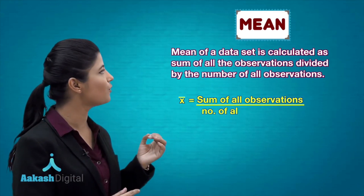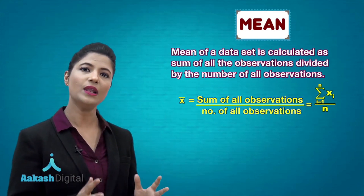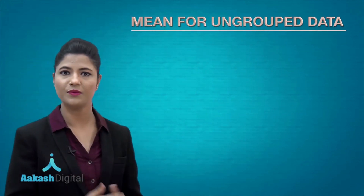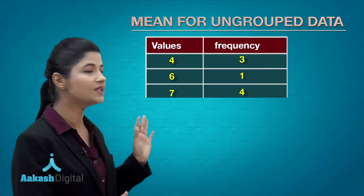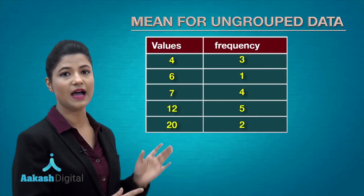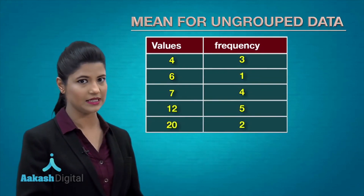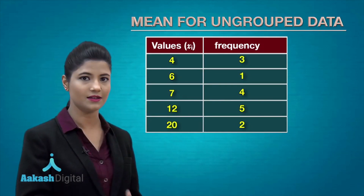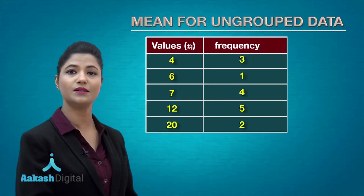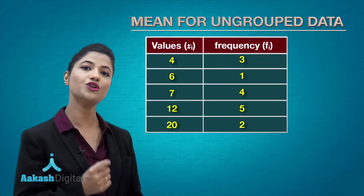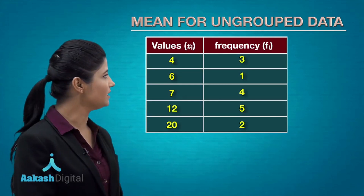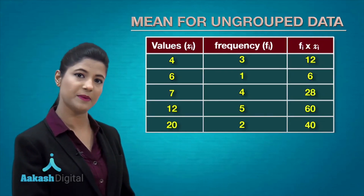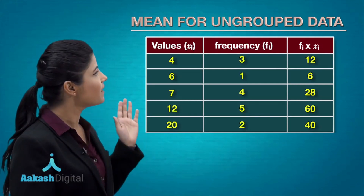Now let's see how you obtain the mean for ungrouped data. To obtain the mean for ungrouped data, first you obtain your frequency distribution table having values and their respective frequencies. Values are denoted as xᵢ, which represents the observation of the ith class, and frequencies are denoted by the symbol fᵢ, which represents the frequency of the ith class. Then you take the product of fᵢ with xᵢ for each respective class.